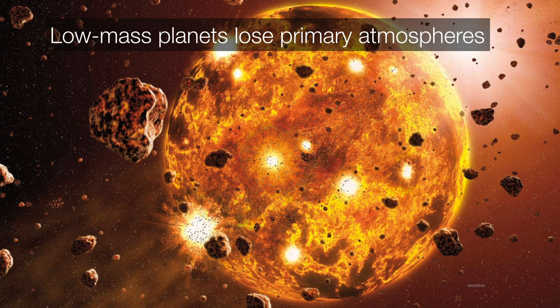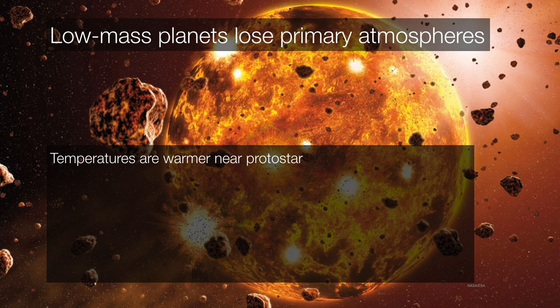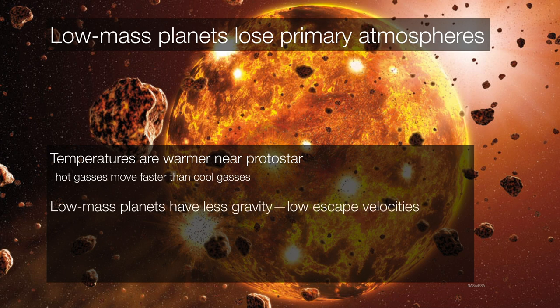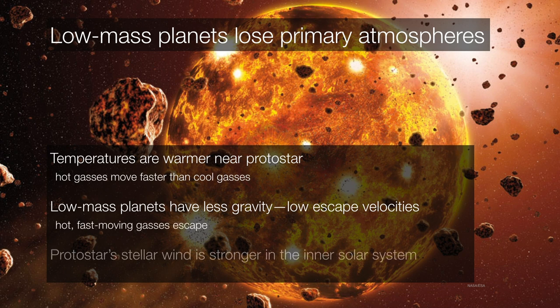However, in the inner solar system, where we have lower mass proto-planets, it's a much different situation. They are unable to hold on to those primary atmospheres. Remember, the temperatures are much warmer near the protostar, or in this case, the proto-sun. And hot gases are going to always move faster than cold gases. So if you have a low-mass planet with low-mass gases, they can easily achieve escape velocity from those gases. Remember, the hotter they are, the faster they're going to be moving.